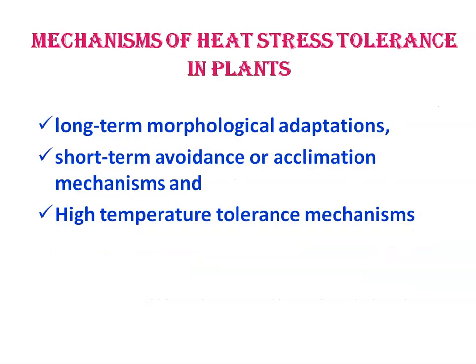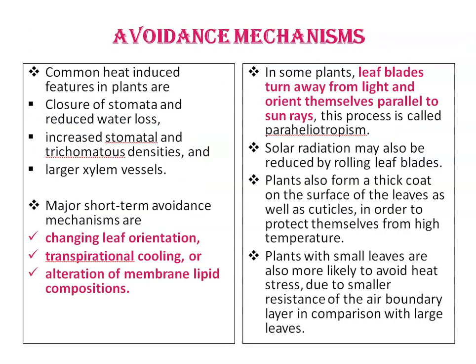Under high temperature conditions, plants exhibit various mechanisms for surviving, which include long-term morphological adaptations, short-term avoidance or acclimation mechanisms, and high temperature tolerance mechanisms. Common heat-induced features in plants are closure of stomata and reduced water loss, increased stomatal and trichomatous densities, and larger xylem vessels. Major short-term avoidance mechanisms are changing leaf orientation, transpirational cooling, or alteration of membrane lipid composition. In some plants, leaf blades turn away from light and orient themselves parallel to sun rays. This process is called paraheliotropism.